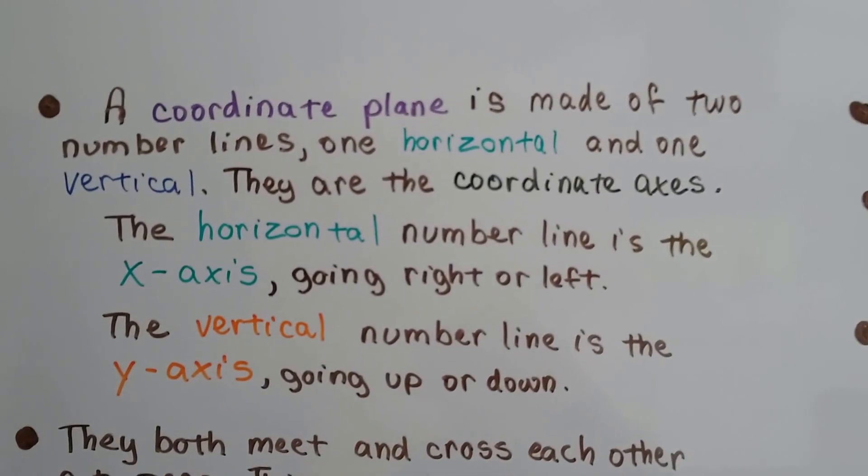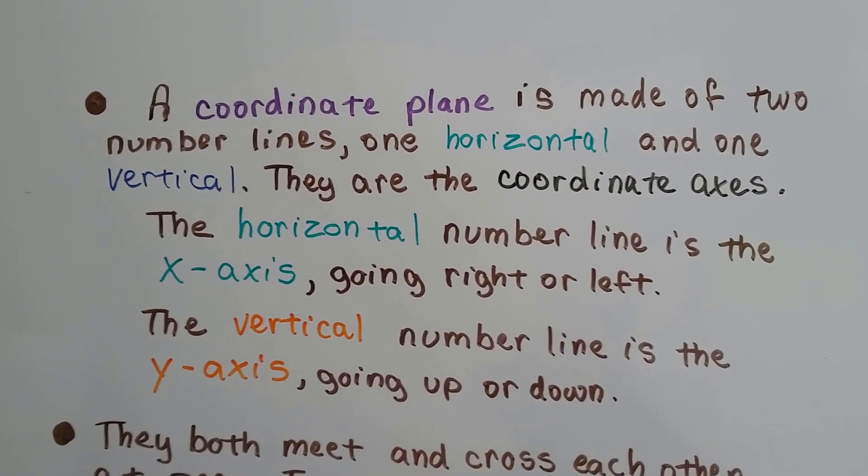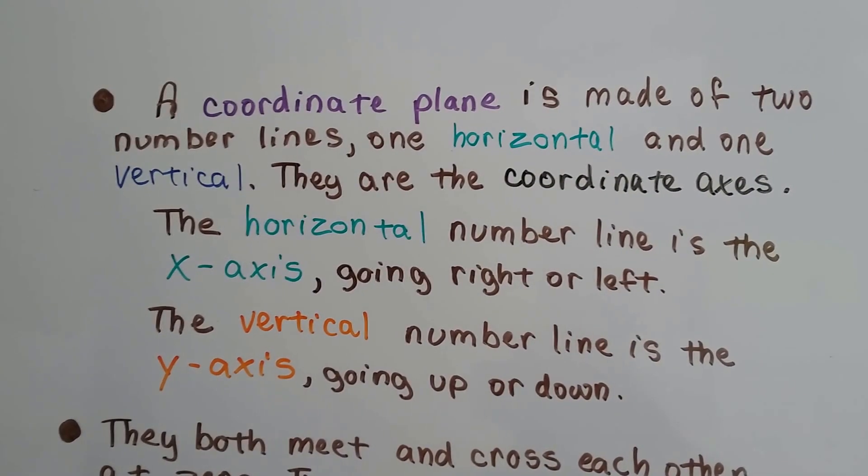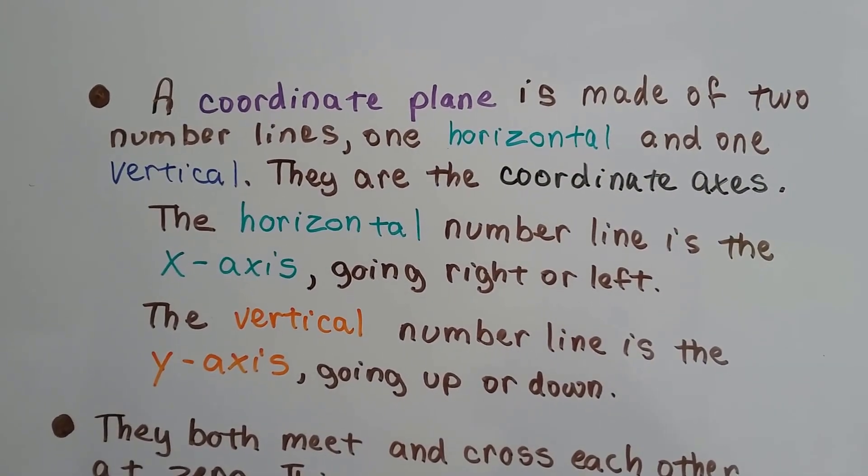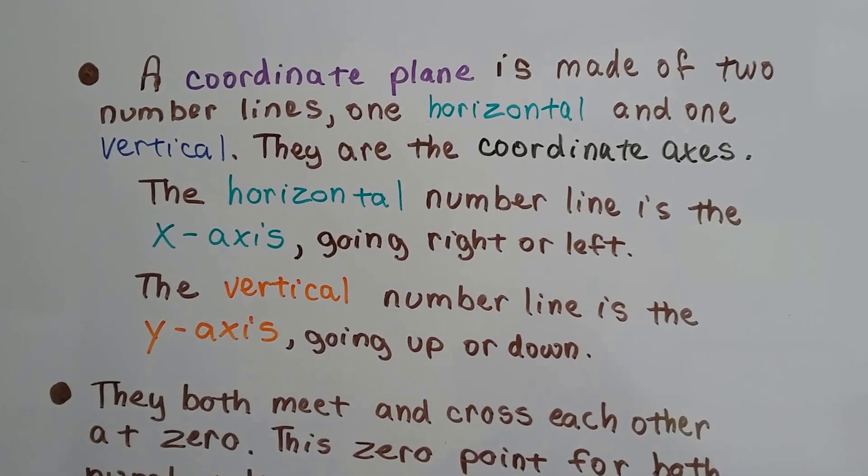A coordinate plane is made of two number lines, one horizontal and one vertical. They're called coordinate axes. The horizontal number line is the x-axis going right or left, and the vertical number line is the y-axis going up or down. This is not a typo—axes is plural for axis.